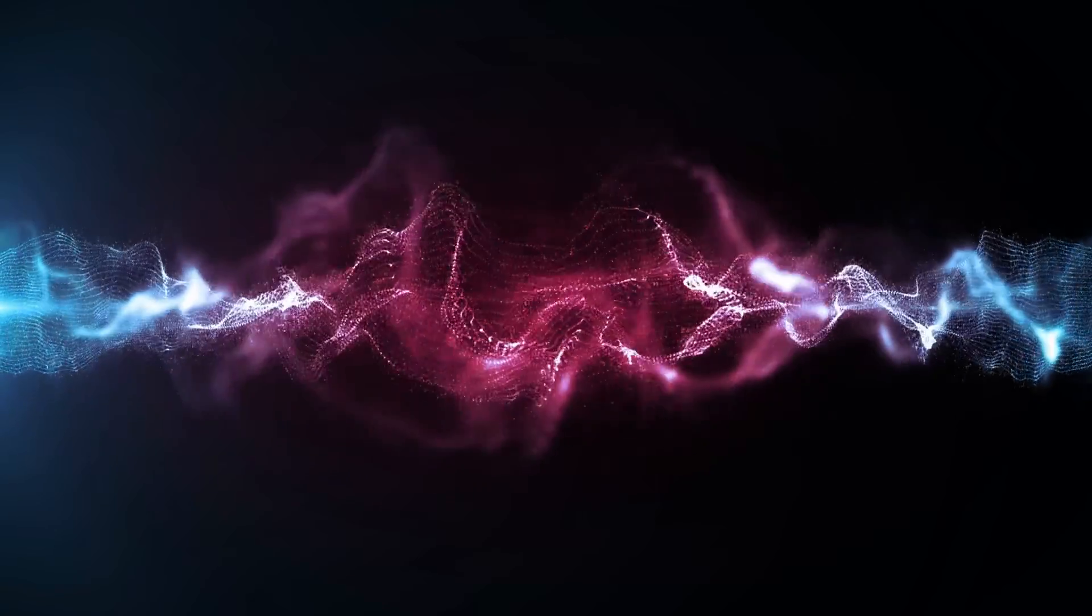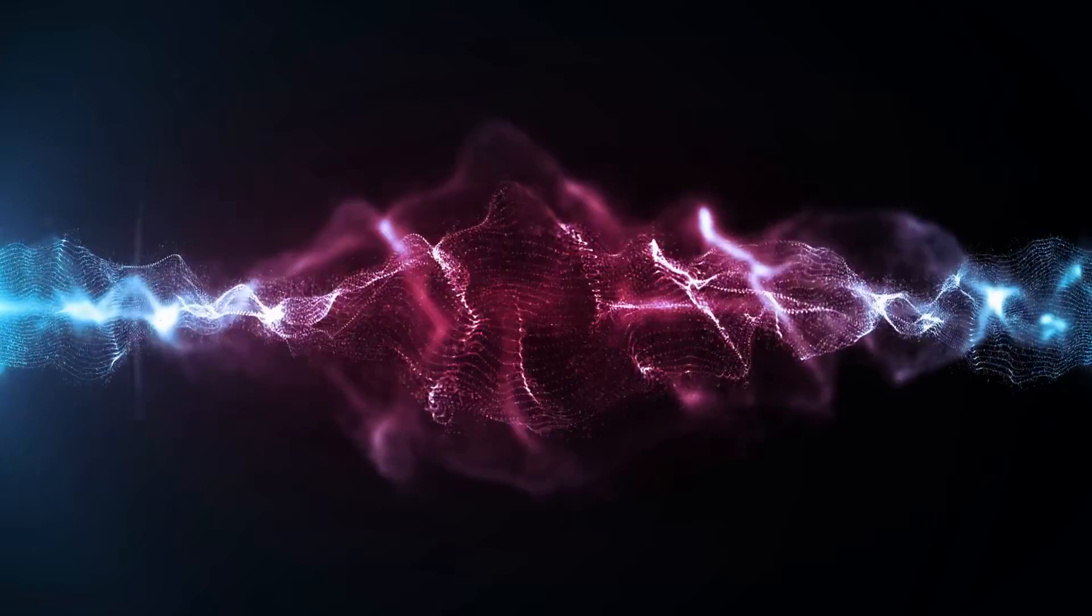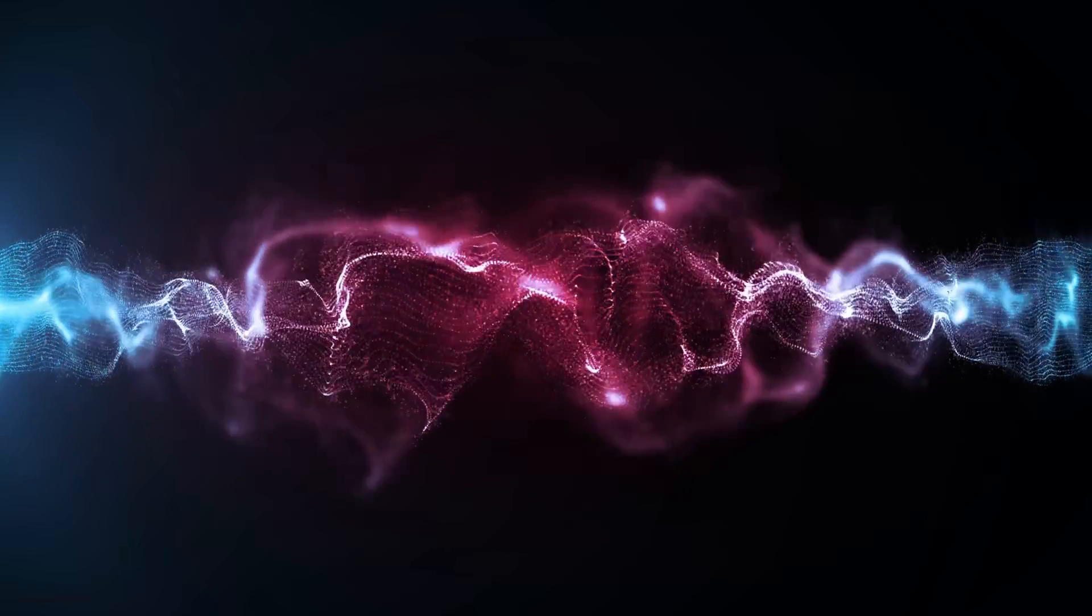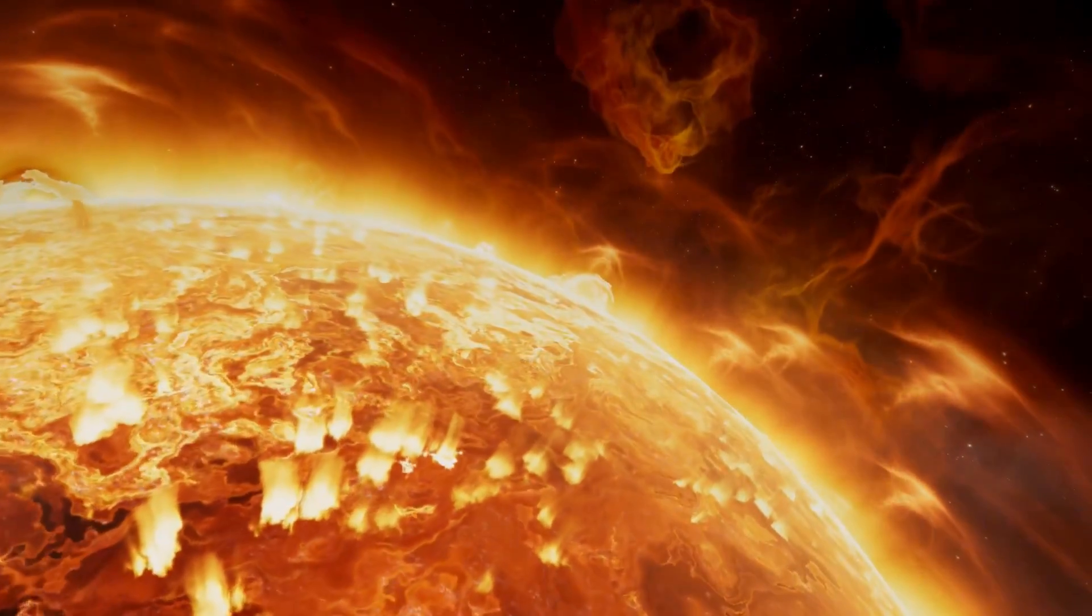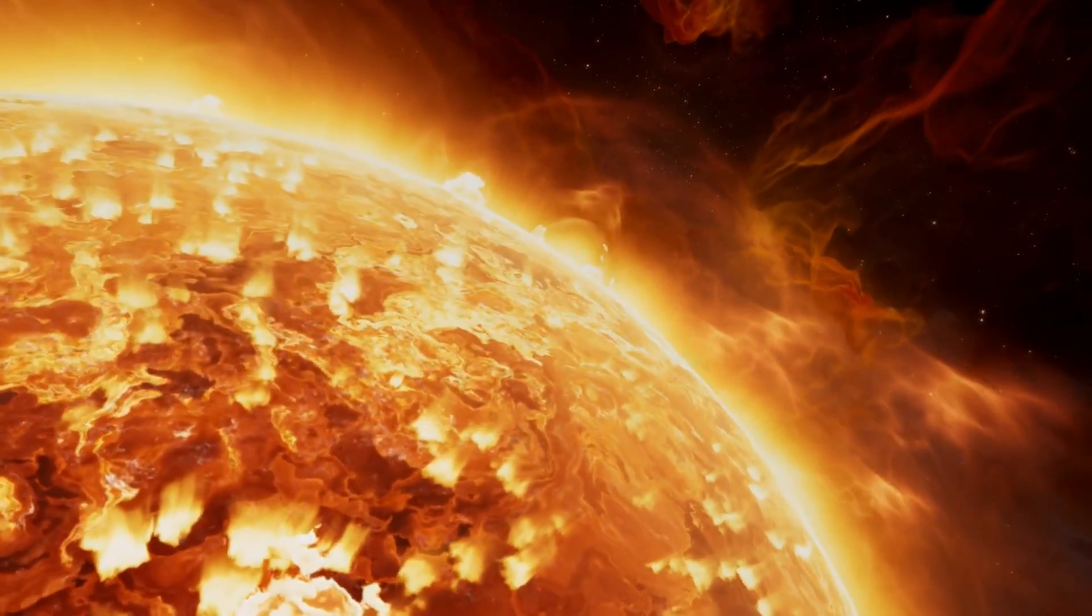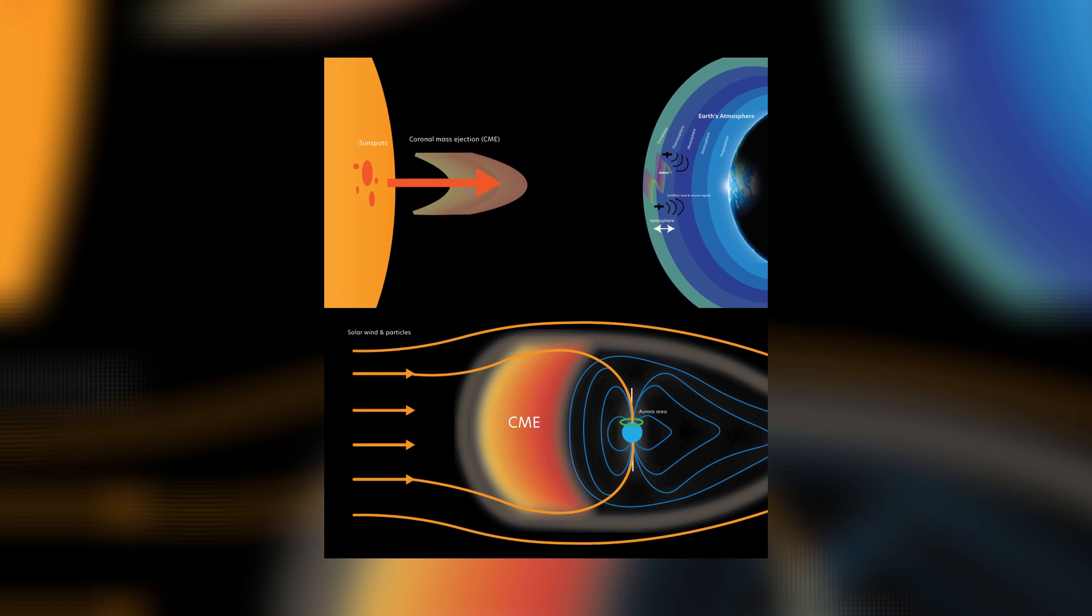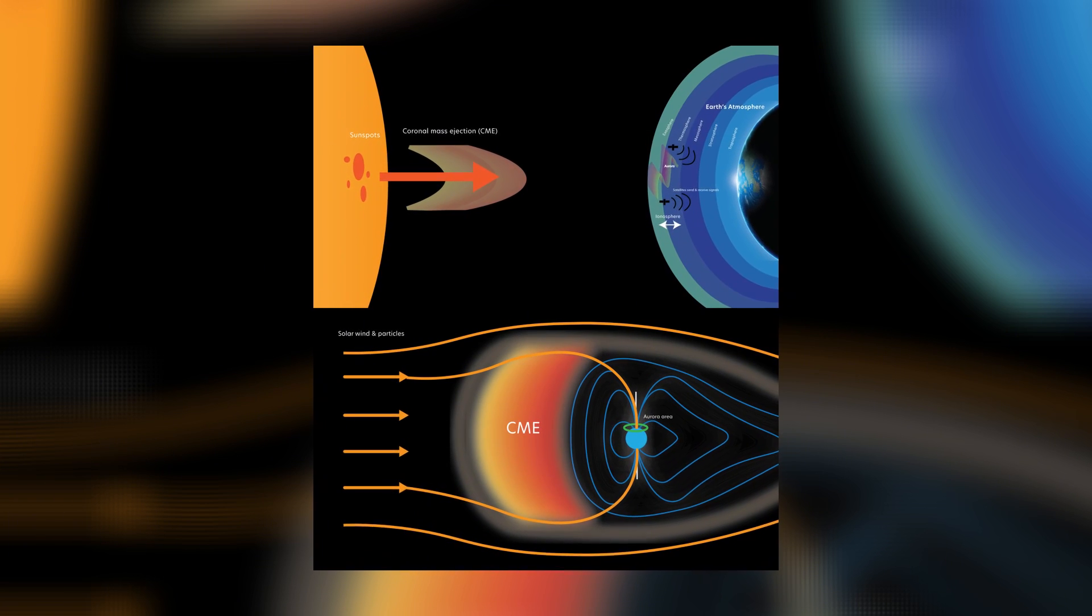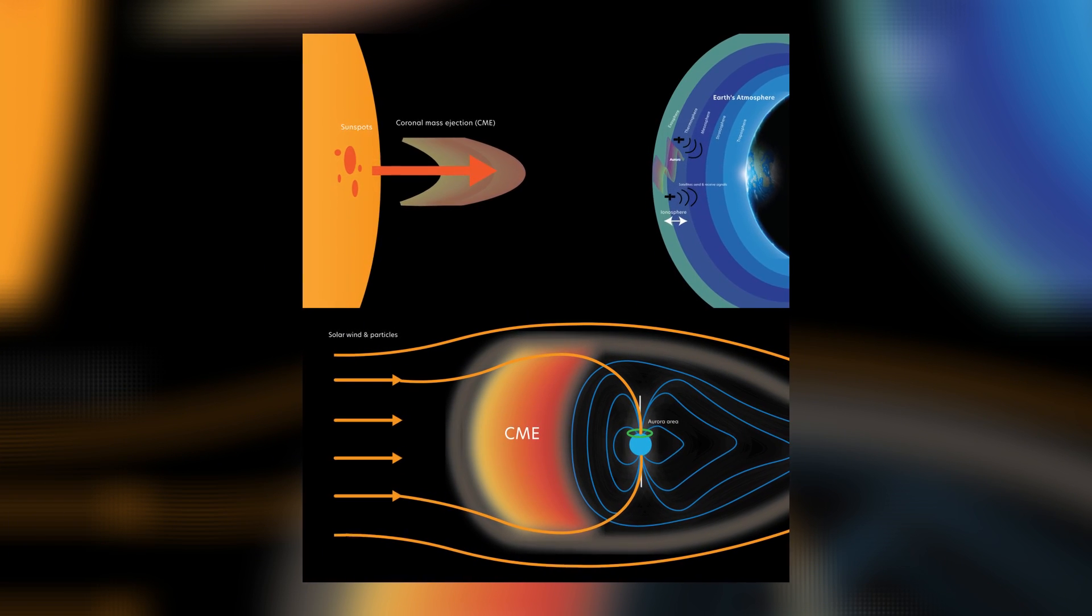Filaments are elongated ribbons of dense plasma suspended above the sun's surface by magnetic fields. They appear stable, but under certain conditions they can lose balance and erupt. These eruptions, known as coronal mass ejections or CMEs, expel billions of tons of charged particles into space.